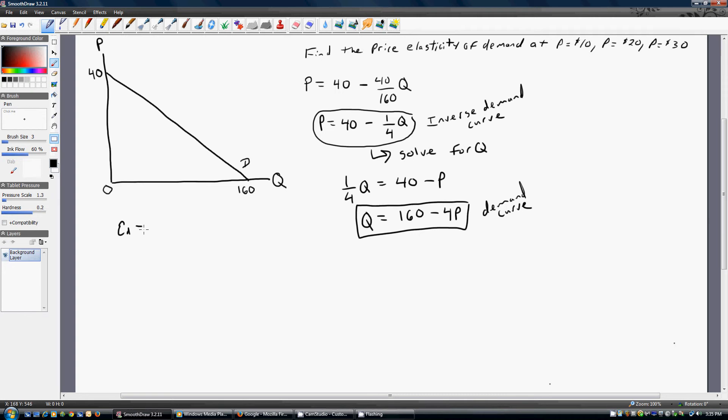So the elasticity of demand requires three inputs. The first thing we need to input is the derivative of the demand equation, this regular demand equation that we solved here, with respect to price. And then we're going to multiply that by price divided by quantity. One thing that I try to remember is that the cross terms should match. If there's a q here, there should be a q here. If there's a p here, there should be a p here. So we need three things. We need the derivative. That's one thing. We need to evaluate this elasticity at a certain price. That's the second thing we need. And then we need to evaluate it at the corresponding quantity. That's the third thing we need.